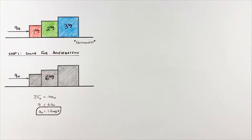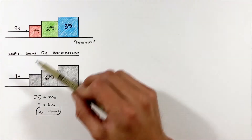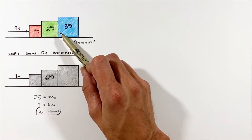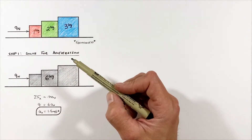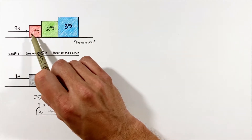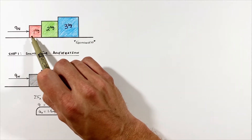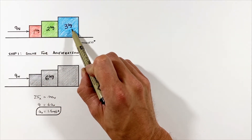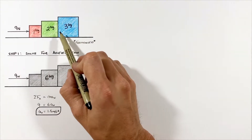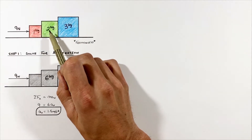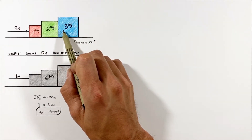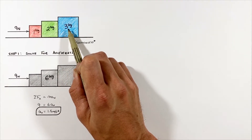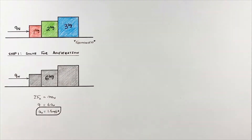Now we're going to solve for the normal force between each of the blocks. The easiest place to start is not with the one-kilogram block but with the three-kilogram block. To find the normal force between the two and three kilogram blocks, we're going to look at the free body diagram of the three-kilogram block.